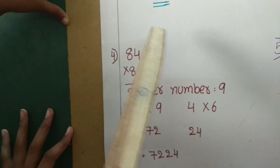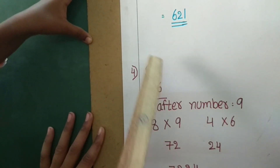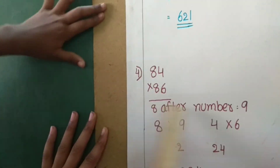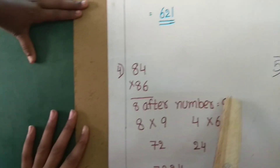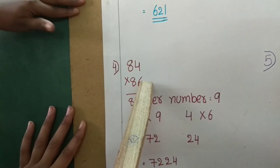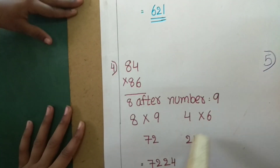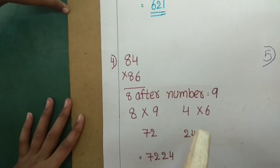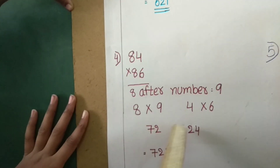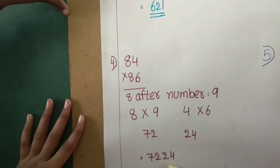Now another example: 84 into 86. The tens digit 8, the next number is 9. 8 into 9 is the first part of the multiplication. 4 into 6 is equal to 24. Now the answer is 7224.